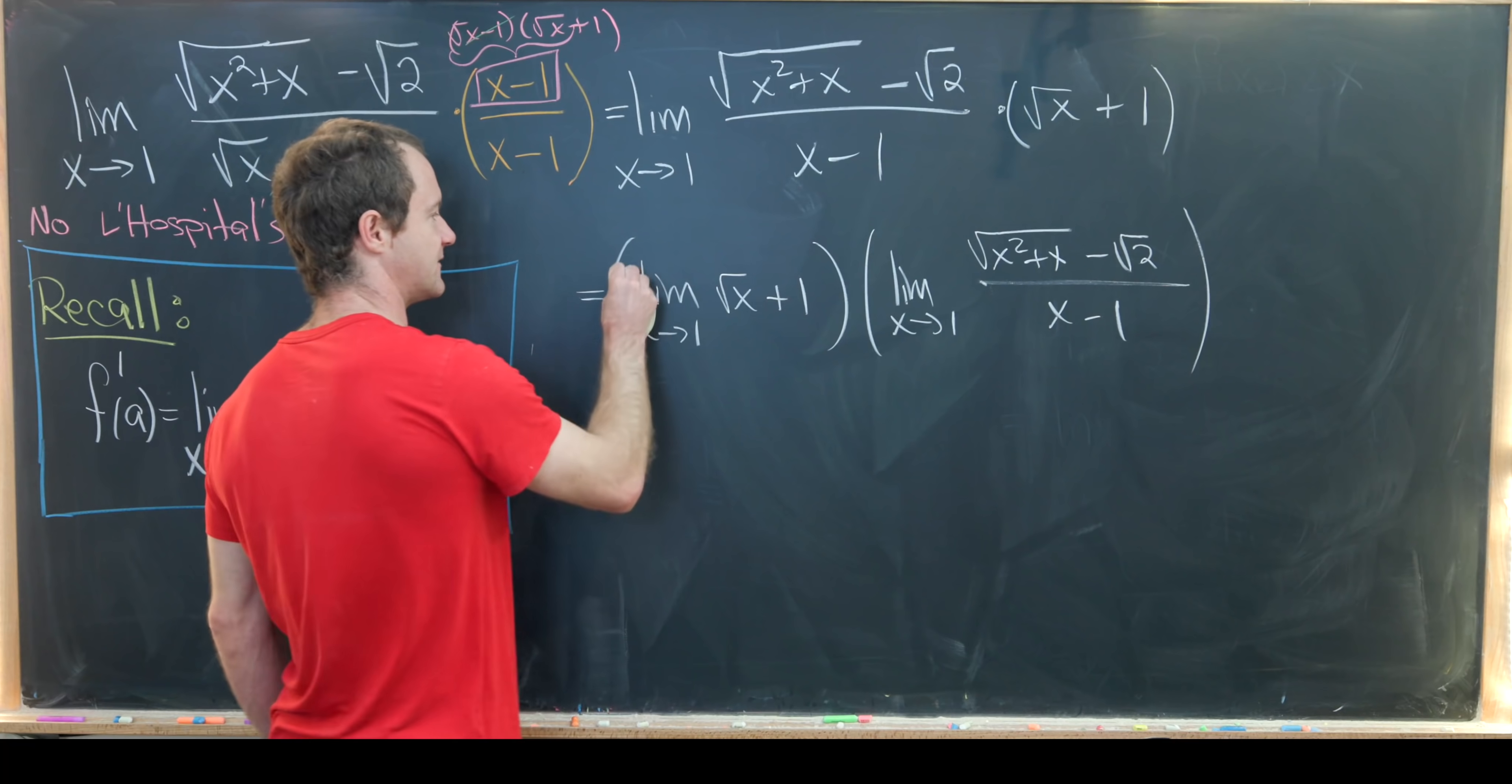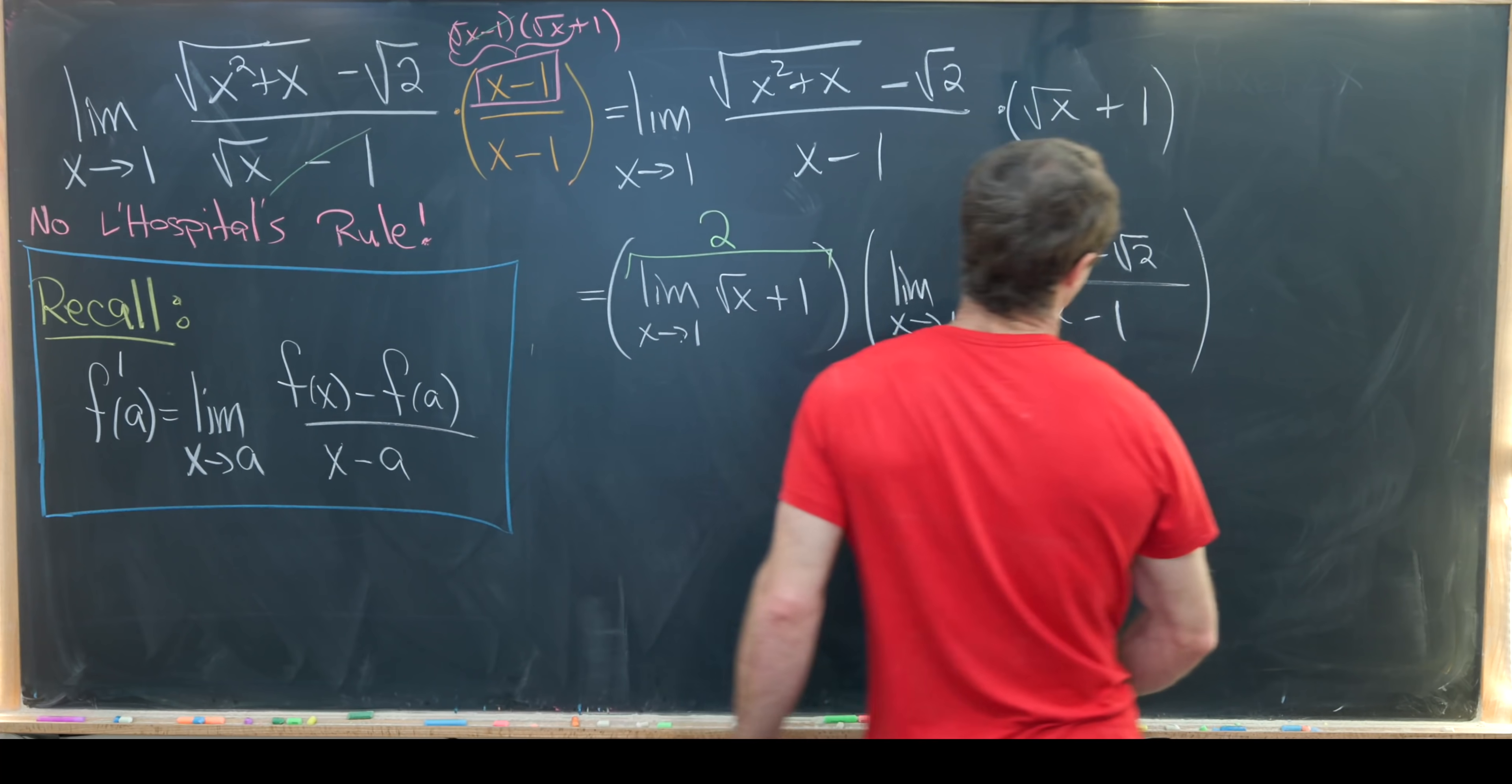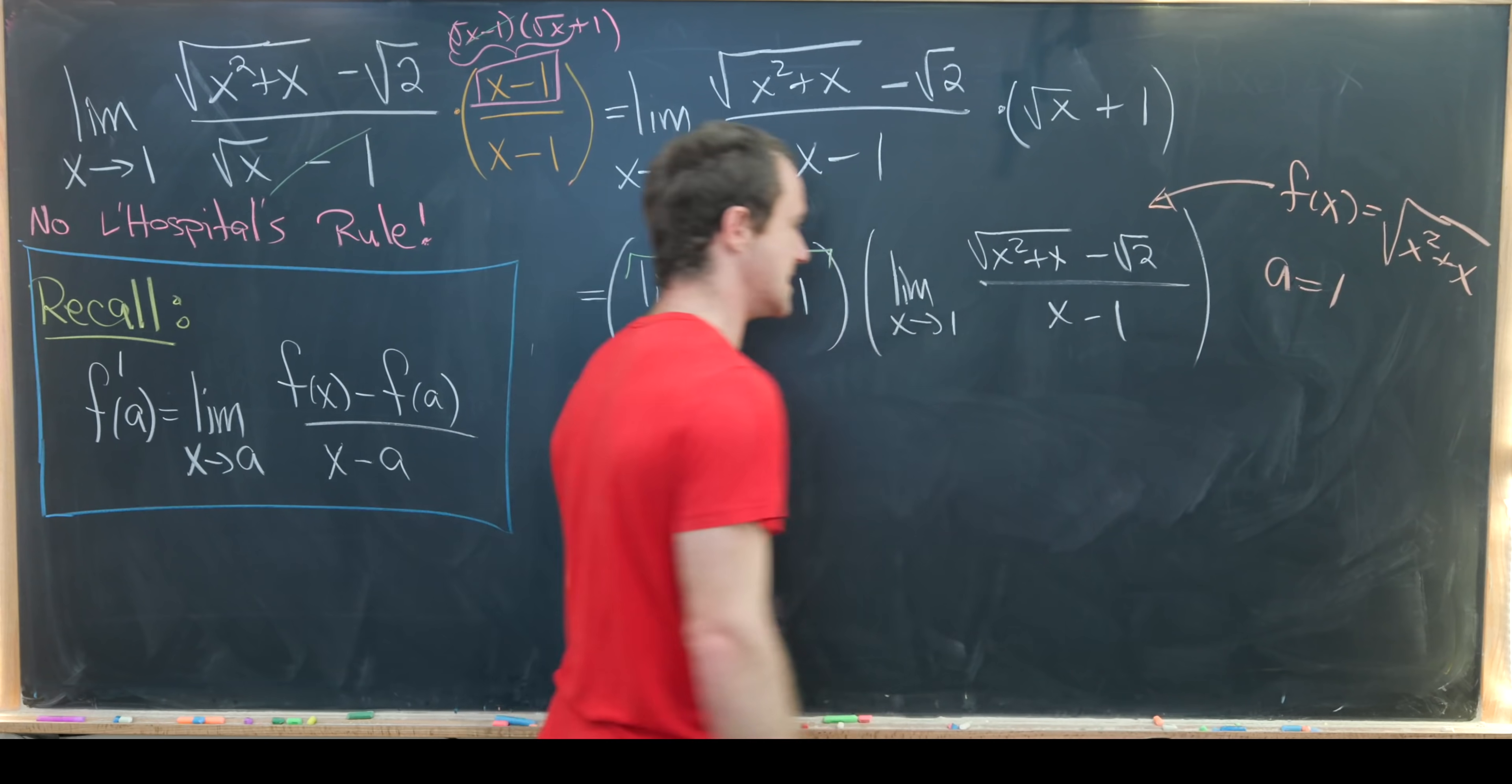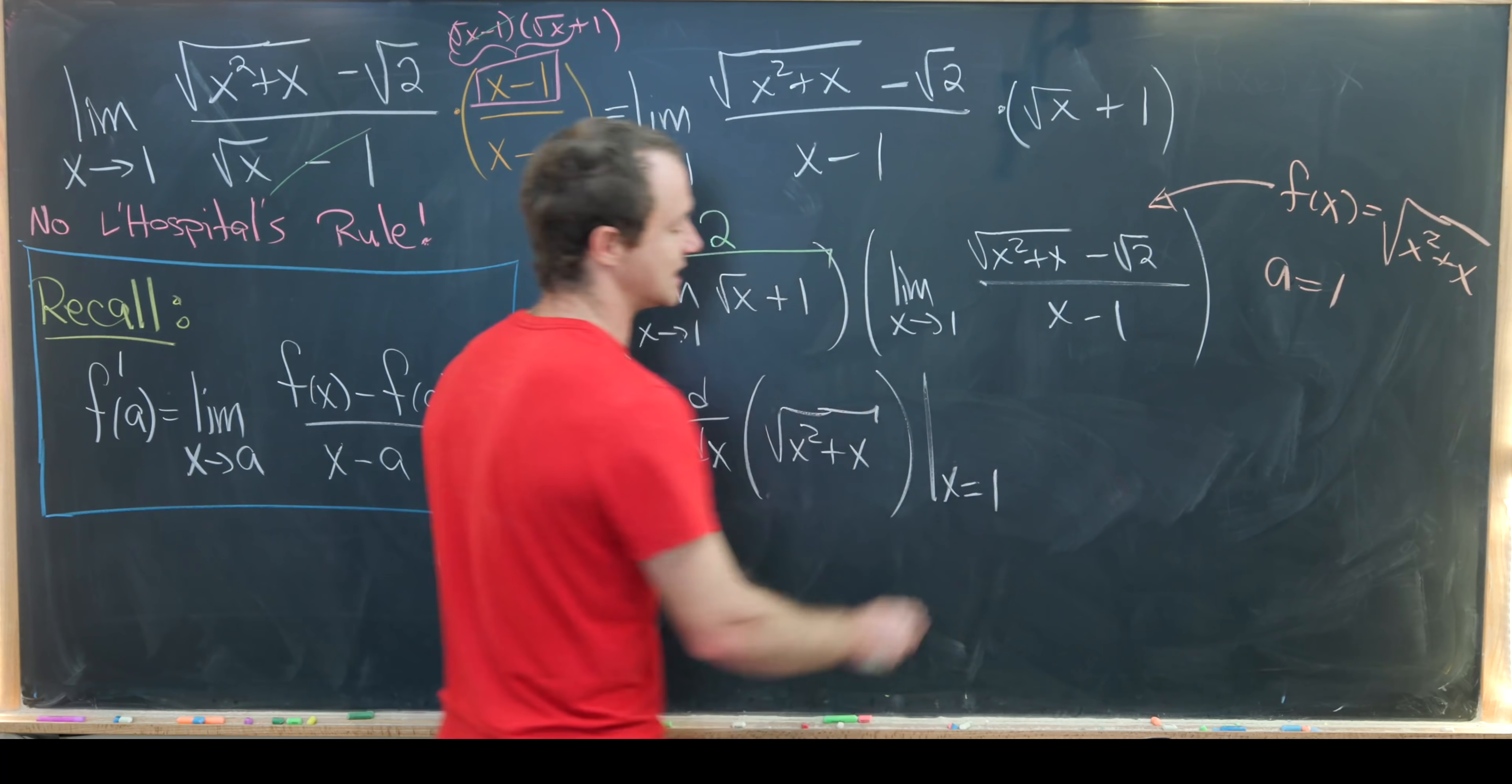So now this first one has a fairly straightforward limit. Notice that's just going to be equal to 2. But the second one is now set up so that it looks exactly like the definition of the derivative, where the function that we are differentiating is the function f of x equals square root of x squared plus x. And then our point here is a equals 1. So we've got 2 times the derivative with respect to x of square root of x squared plus x evaluated at x equals 1.